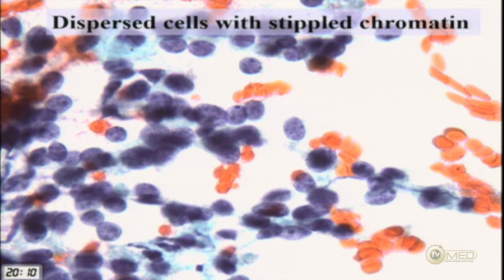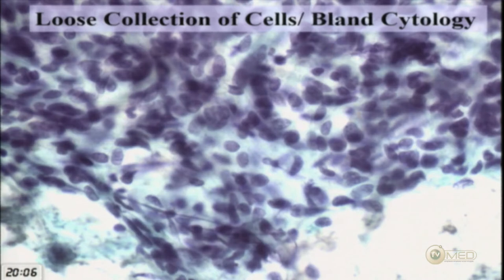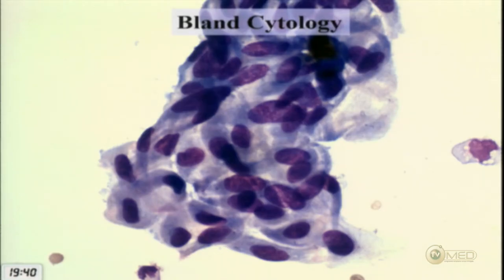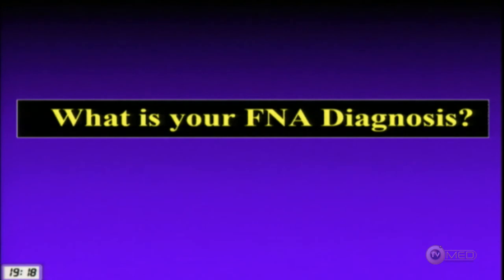Some cells have a plasma cytoid look to them. Another view shows the cells in a group without much atypia — no necrosis or mitotic activity. Nuclei are fairly uniform with smooth membranes and this really nice stippled chromatin pattern. At high magnification on liquid-based preparation, cells are very bland with an almost spindle-like pattern and a plasma cytoid shape with the eccentrically located nucleus.